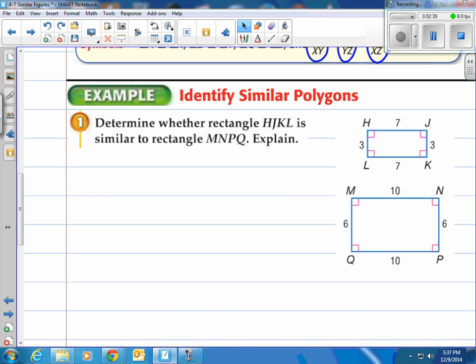Are these polygons similar, these two rectangles here? Determine whether rectangle HJKL is similar to rectangle MNPQ and explain. You look at them, you go, man, they look similar. Well, are they similar? Yeah, they're both rectangles, but are they similar?